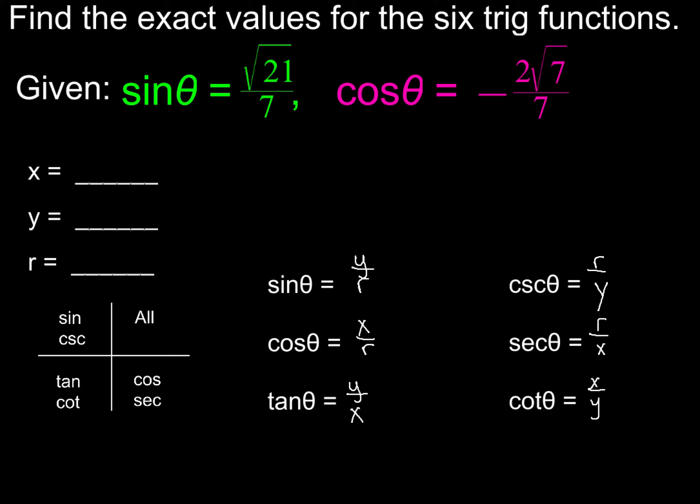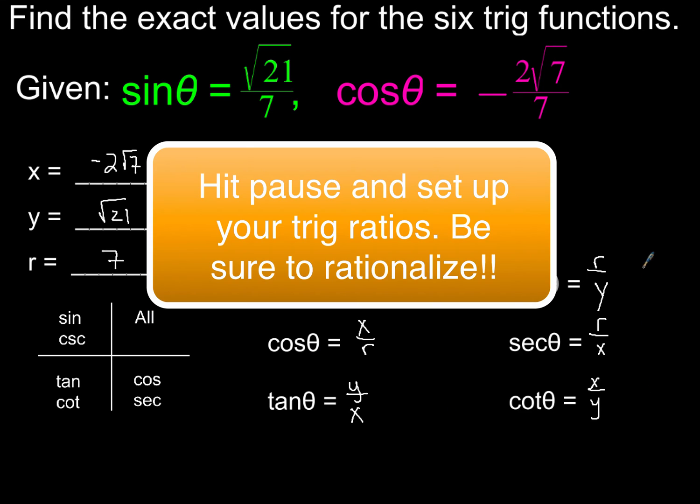In the beginning, sine theta, we're given square root of 21 over 7. So I know my y is going to be square root of 21, and 7 is going to represent my radius. Now for cosine, that's going to be x over r. My x is just going to be negative 2 square roots of 7. So I've got all the information I need right there to go ahead and set up all the trig ratios that I've got. So go ahead and hit pause and just set up your trig ratios. Yes, you're going to have to do some rationalizing on some of this, but I think you guys can handle it. So go ahead and hit pause and then see how you did.